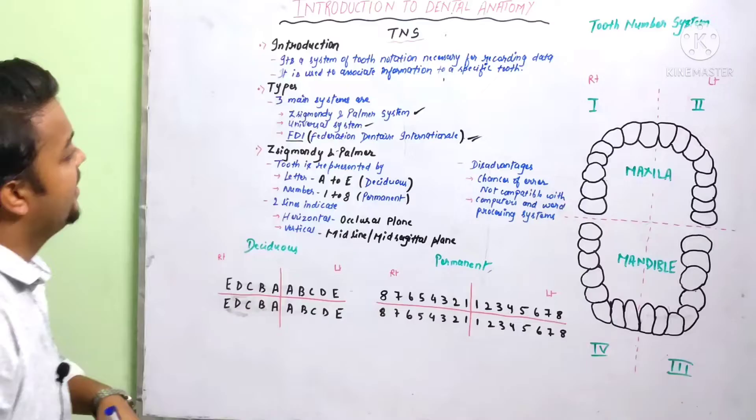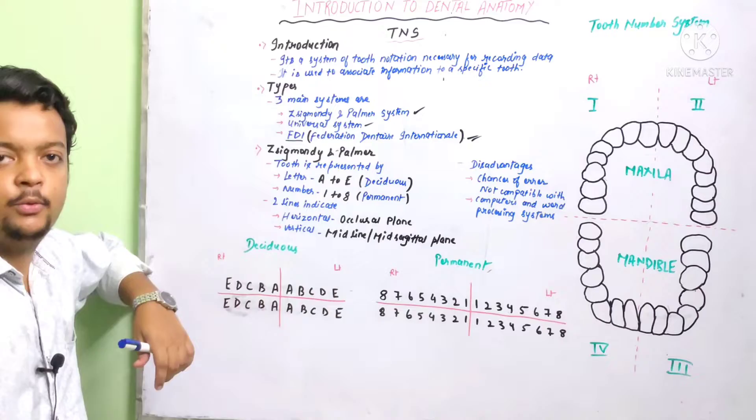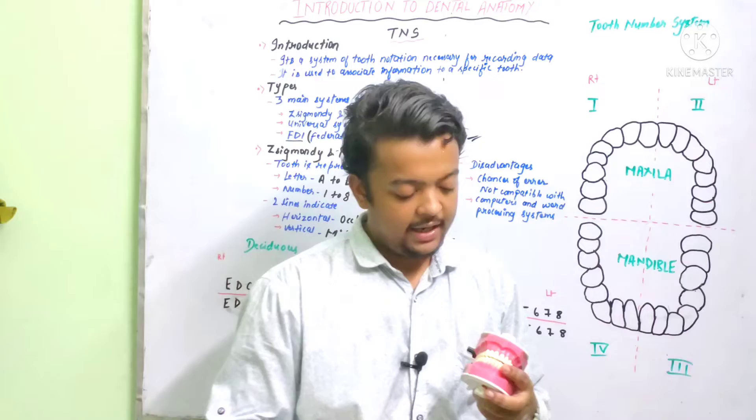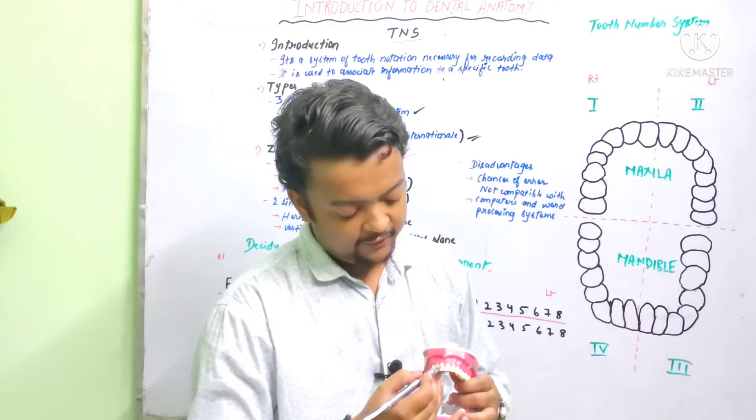Before proceeding further, I came to know that some of you are having difficulty understanding my previous video about the surfaces of the tooth. So let me give you a quick revision on that. Let's suppose this is an artificial jaw or simply a jaw set, and we have the midline here. Let us consider the upper incisors.